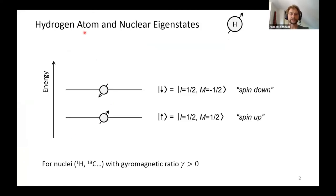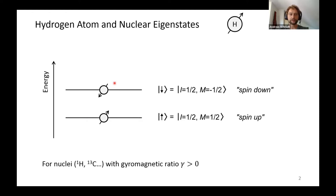When we consider the hydrogen atom, we basically have a spin-half particle which can have two distinct energy eigenstates in a magnetic field, often referred to as the spin-up state and the spin-down state. For all nuclei with spin-half and a gyromagnetic ratio larger than zero — with a smaller ratio it would be the opposite — this single proton would have this kind of alignment.